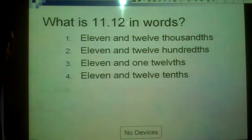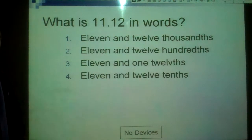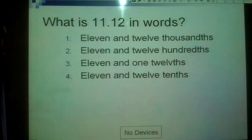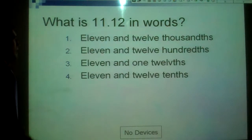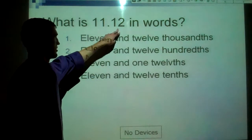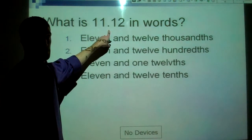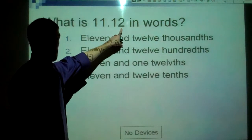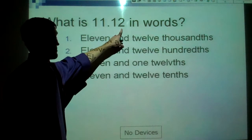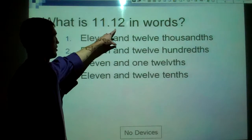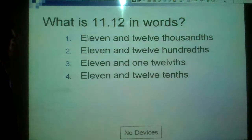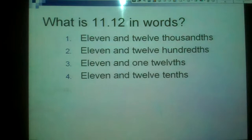First thing that we started off with here, and the students would have clicked in whatever answer they thought they had. I have no devices hooked up right now, but we will show the correct answers here. What is this number in words? Well, we have 11 and something, so we know that 11, and then our decimal point reads and. Our 2 here is in the hundredths place, so that means we have 11 and 12 hundredths. So, we should have been looking at number 2 there, 11 and 12 hundredths.